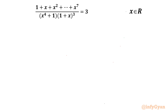Welcome back to Infigyan friends. In this very exciting video of Algebraic Challenging Equations, we are going to take up one very interesting rational equation today. The given equation is 1 plus x plus x² plus x³ up to x⁷, over (x⁴ plus 1) times (1 plus x)³, equal to 3.